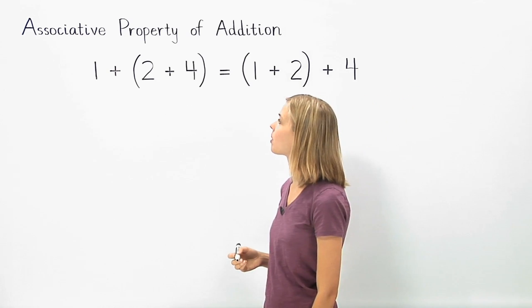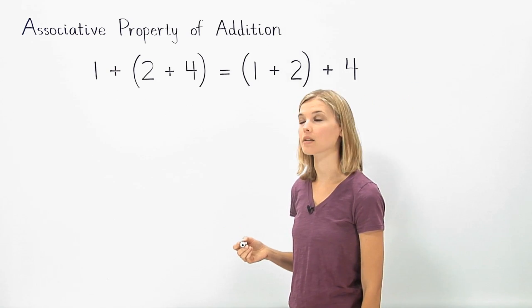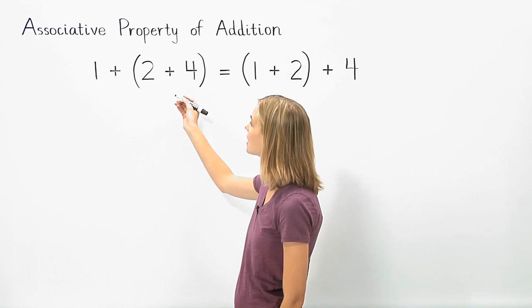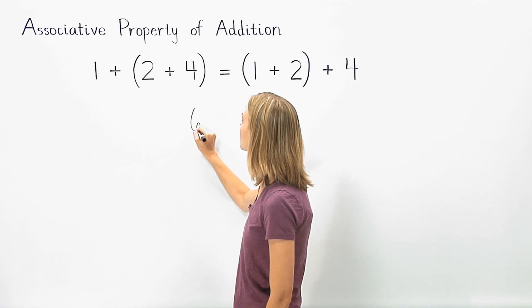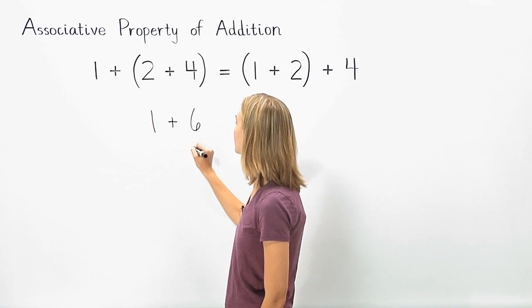On the left side of the problem, the order of operations tells us that we must simplify inside the parentheses first. So 2 plus 4 is 6, and 1 plus 6 is 7.